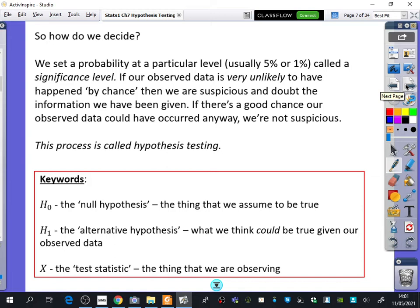So, this is how we decide how we're going to decide. What we do is we set a probability at a particular level, which is usually 5% or 1%. And this is called the significance level. If our observed data is very unlikely to have happened by chance, given that the game is still not rigged, then we become suspicious and we doubt the information that we have been given. If there's a good chance that our observed data could have occurred anyway, then we're not suspicious. This will make more sense when we put it in the context of an example. And this whole process that we've got here is called hypothesis testing.